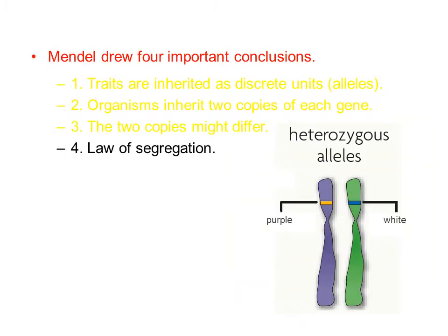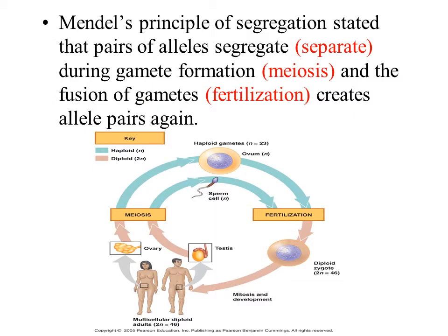The fourth very important conclusion that Mendel drew is referred to as the law of segregation. Mendel's principle of segregation stated that pairs of alleles separate during gamete formation, and that those gametes would fuse to create a zygote — that is when the pairs would reunite again.